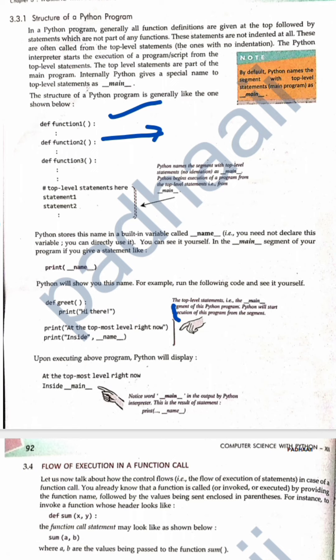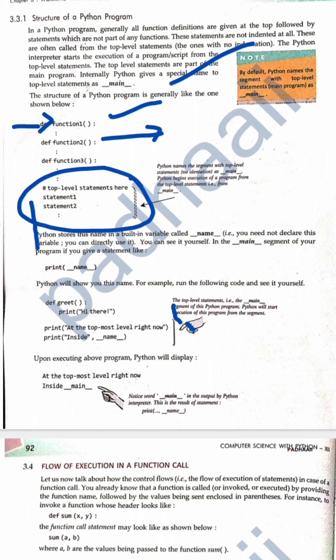Internally, Python gives a special name to the top-level statements — it is called main. The main is the top-level statement or the main program. Whenever we go into the program, it will look into the function definitions and then come into the main function. Python names this particular set as the main function, and whenever a function is called, it will go to the function definition.